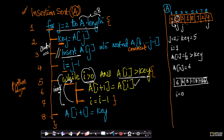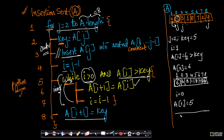As soon as we exit the while loop, it executes A[i+1] = key, which is A[1] = 5. So at the end of the first outer iteration, our array becomes 5, 6, 3, 1, 8, 7, 2, 4. The first two elements are now sorted. Then this outer loop restarts and j becomes 3, meaning A[1] and A[2] are already sorted.